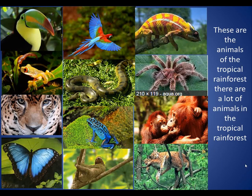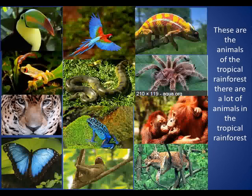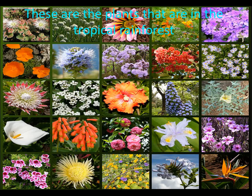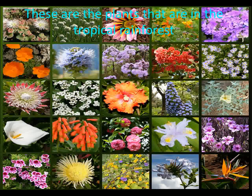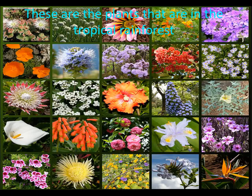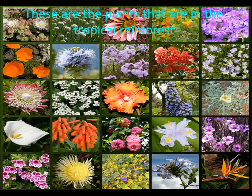These are the animals of the tropical rainforest. There are a lot of animals in the tropical rainforest. One of the things I want you to do is add some information about medication — a lot of medications we use come from ingredients and plants we get from the rainforest. So we'll have to Google that and research what drugs we've gotten from the rainforest. Keep going.